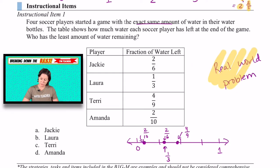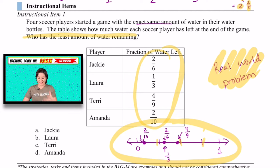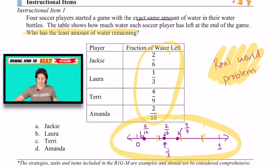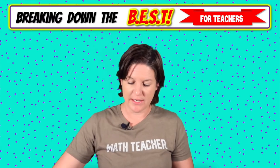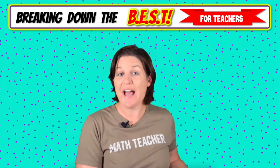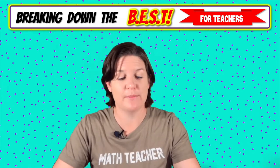And here we have a real world problem over here, where we have a fraction of water that's left, and having to figure out who has the least amount remaining. So being able to take these amounts, throw them on a number line using our benchmark fractions right there to kind of plot and estimate-ish where those fractions would be and determine who had the least amount of water remaining. That's the standard that we're working with today, breaking it down, seeing it in action. Let's go ahead and see what you have access to with your taking on the best membership.